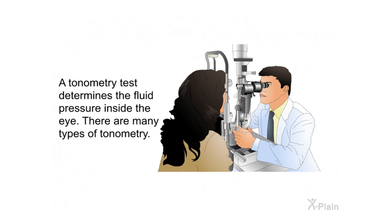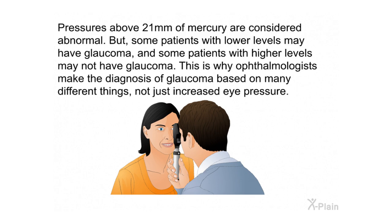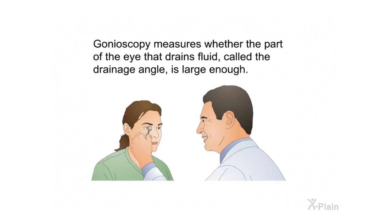A tonometry test determines the fluid pressure inside the eye. One type uses a purple light to measure pressure; another is the air puff test, which measures the resistance of the eye to a puff of air. Pressures above 21 millimeters of mercury are considered abnormal, but some patients with lower levels may have glaucoma and some with higher levels may not. Ophthalmologists therefore base their diagnosis on many factors, not just eye pressure. During pachymetry, the eye is numbed with drops and an ultrasound probe measures the thickness of the cornea. Gonioscopy measures whether the drainage angle — the part of the eye that drains fluid — is large enough.